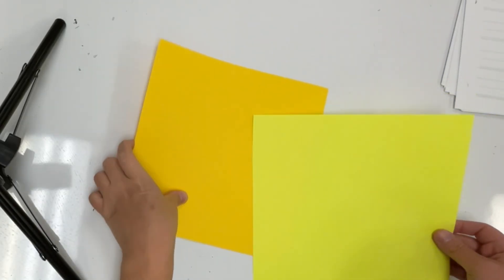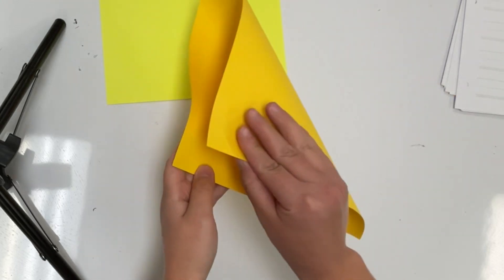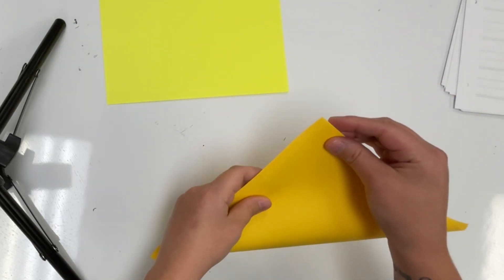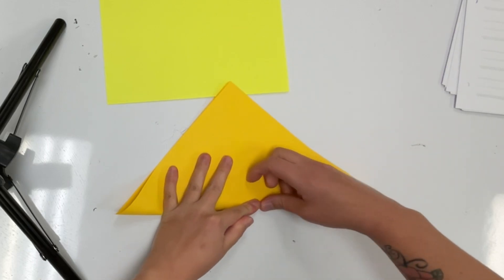For our diamond mural, I have selected two different colored pieces of paper. I will choose one to fold in half corner to corner so that it looks like a triangle, as you can see here.